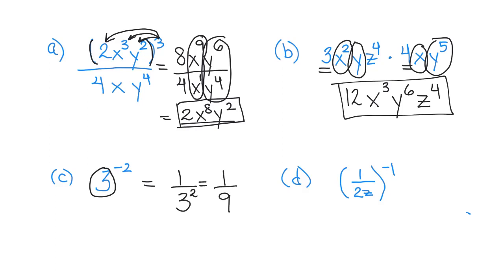Let's try another one. So here we have a negative 1 as the exponent. So I'm going to take the reciprocal of the base. The base is 1 over 2z. So if I take the reciprocal, that would be 2z over 1. And now the exponent becomes positive. We know anything over 1 is just itself. So the answer would be 2z.